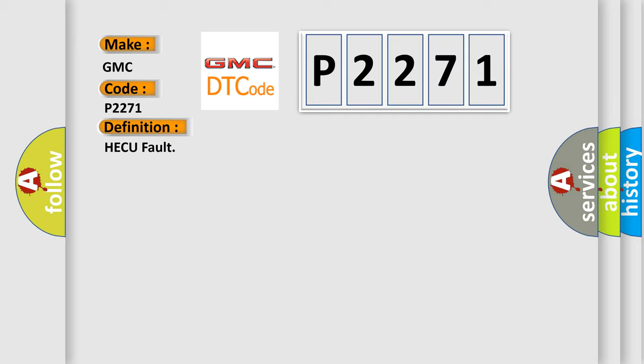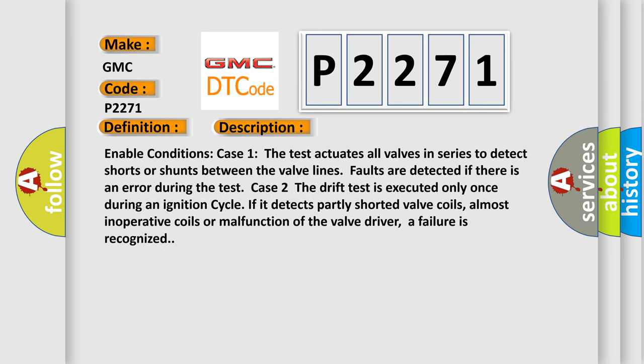And now this is a short description of this DTC code. Enable conditions Case 1: The test actuates all valves in series to detect shorts or shunts between the valve lines.